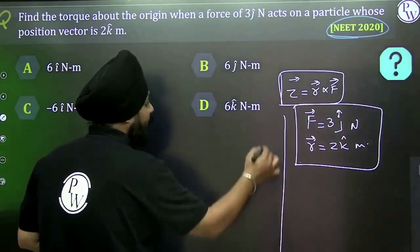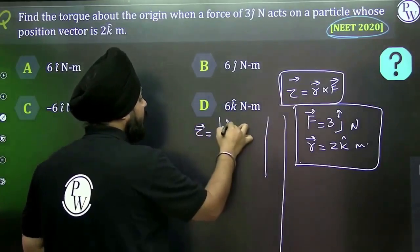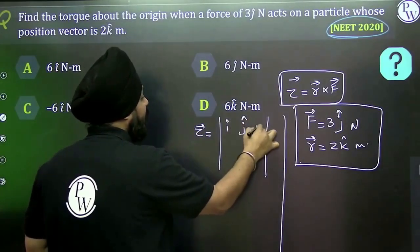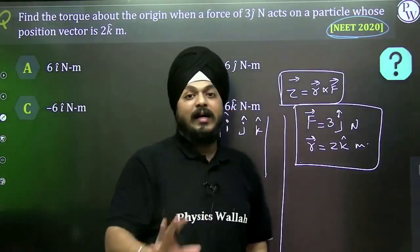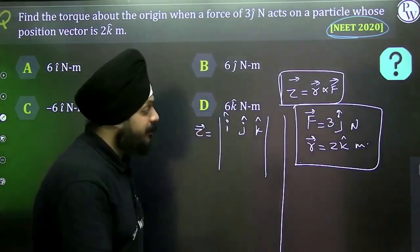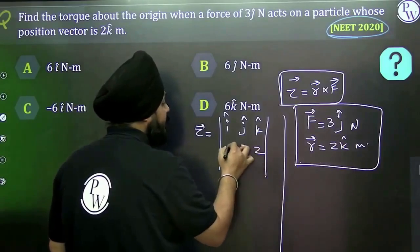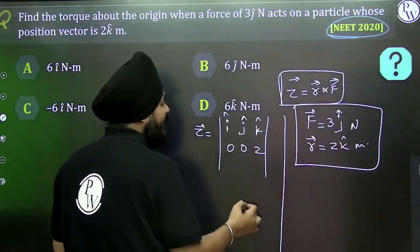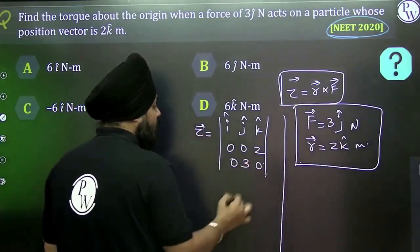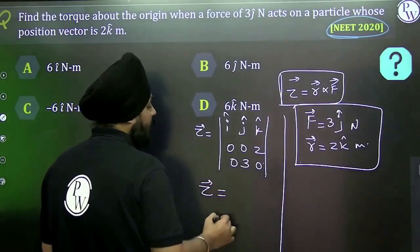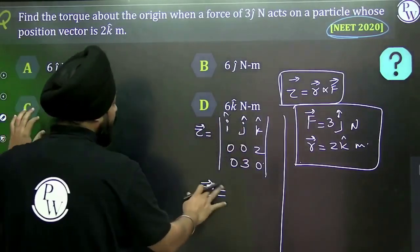To solve the determinant for torque: r = 2k̂ means components (0, 0, 2); F = 3ĵ means components (0, 3, 0). Setting up the determinant with î, ĵ, k̂ in the first row, then (0, 0, 2) and (0, 3, 0) in subsequent rows, we expand to calculate the cross product and get the torque. We will solve this in the next example.